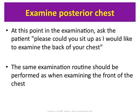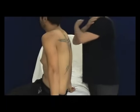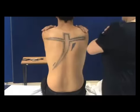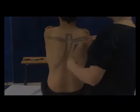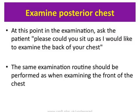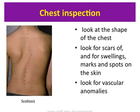Now ask the patient to sit forward so you can examine their back. It may be helpful to ask them to sit with their arms crossed and hands resting on the opposite shoulder, as this will help move the scapulae partly out of the way and increase your access to the lung fields. Look at the shape of the chest posteriorly and look at the chest wall for surgical scars, chest drains, and radiotherapy tattoos. Check for intercostal recession and whether the movement of the chest is symmetrical.